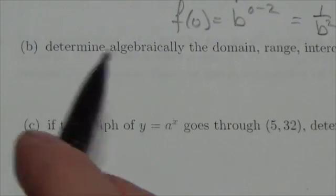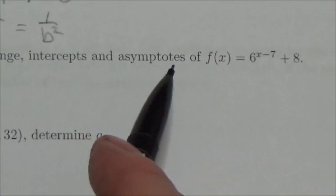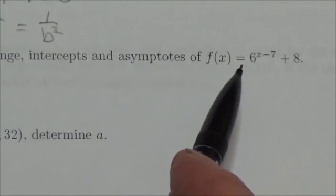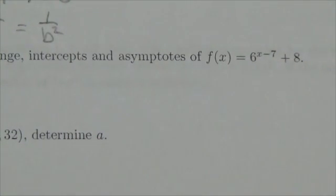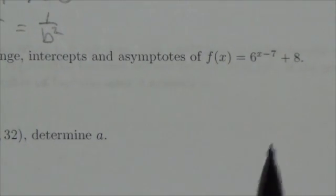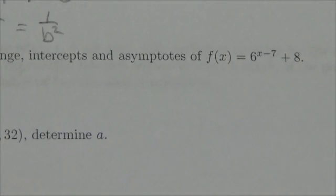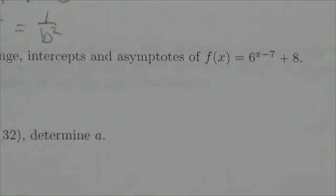Hi everybody. In this question we're supposed to determine algebraically the domain, range, intercepts, and asymptotes of f(x) = 6^(x-7) + 8. We're talking about the graph but we're going to do a lot of this stuff algebraically. So determine algebraically the domain. Let's talk about the domain first.